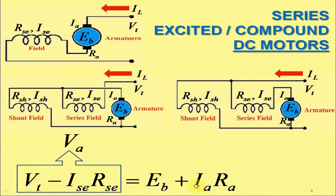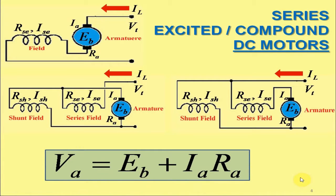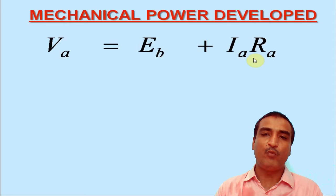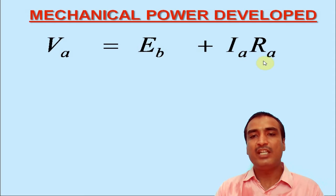Hence, the current voltage relationship for these three sorts of DC motors is also expressed as VA is equal to EB plus IA RA. So, now based on these discussions, we have a typical current voltage relationship for any DC motor as VA is equal to EB plus IA RA.